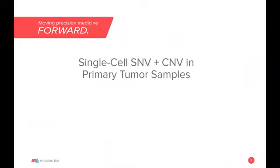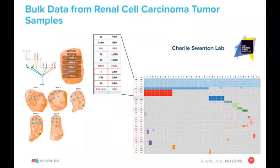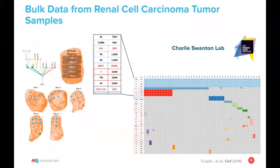Now we want to illustrate the new capability of SNV and CNV using real primary tumor samples. We were very fortunate to collaborate with Charlie Swanton's lab. They published a paper in Cell in 2018, so they had lots of bulk sequencing data which we leveraged in our own single cell experiments. In that paper, they were interested in the heterogeneity across a tumor sample. They took a tumor sample from renal cell carcinoma with five different slices, sampled at many different places within each slice, and did bulk sequencing to assess what the variation was at different locations within the tumor.